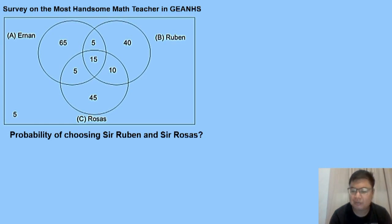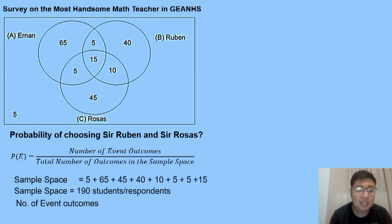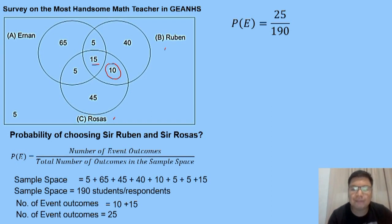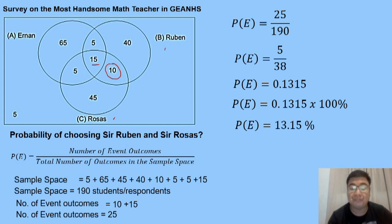Next: probability of choosing Sir Ruben and Sir Rosas. Using the same formula and sample space of 190, we find the intersection of Sir Ruben and Sir Rosas, which includes 10 plus 15 equals 25. Substituting: 25 over 190, lowest term is 5 over 38. Dividing gives 0.1315, multiplied by 100% gives 13.15%.